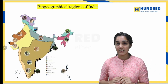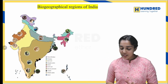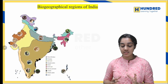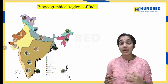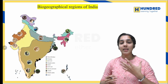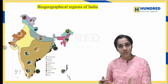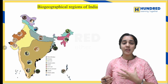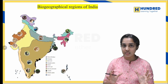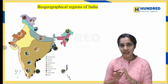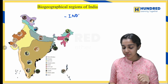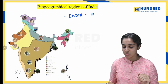So, the biogeographical regions of India — these zones present in India are classified based on the species present, the plants present, the animals present, and depending upon the climatic conditions and soil conditions. Based on these factors, the biogeographical zones are classified.